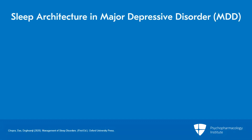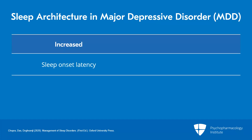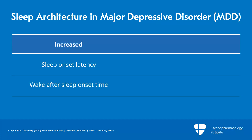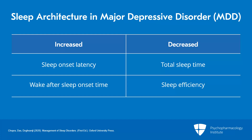What changes occur in the sleep architecture in patients with major depressive disorder? In terms of parameters of sleep continuity, patients with major depressive disorder report increased sleep onset latency, increased wake after sleep onset time, decreased total sleep time, and decreased sleep efficiency. For example, a person suffering with major depressive disorder and insomnia who slept for four hours but was in bed for eight hours would have a reduced sleep efficiency of 50% only.